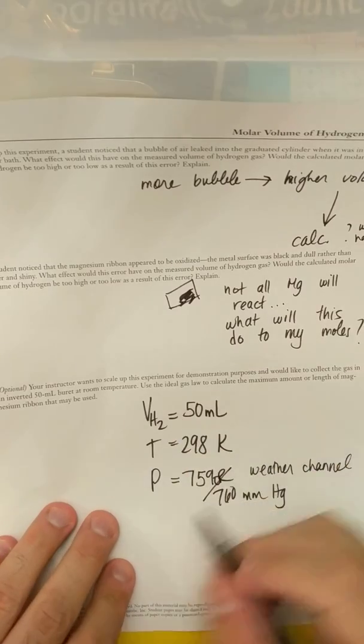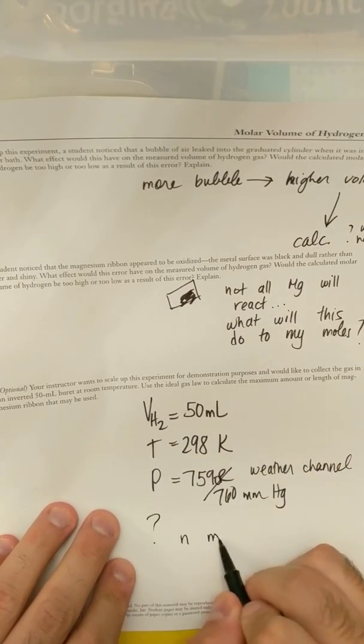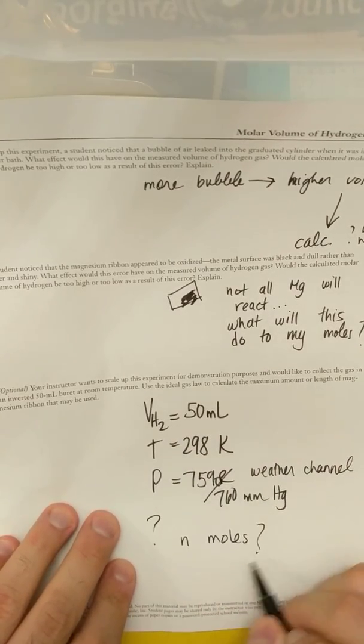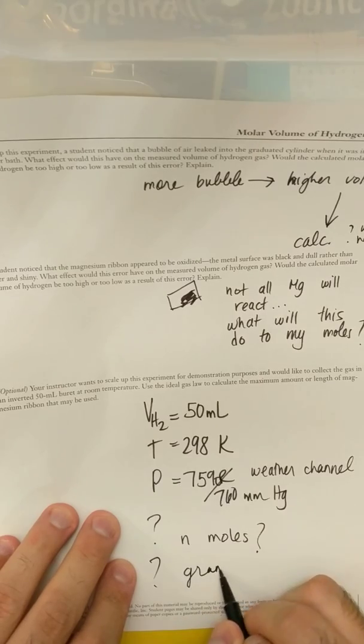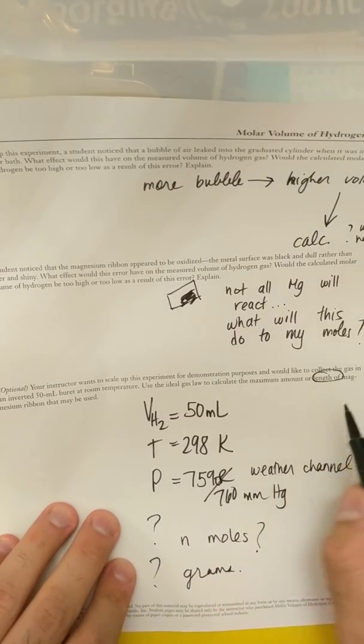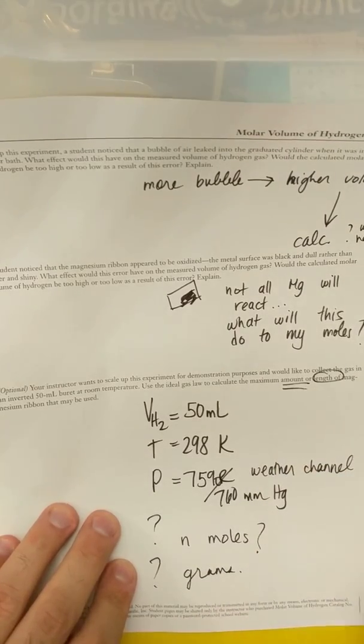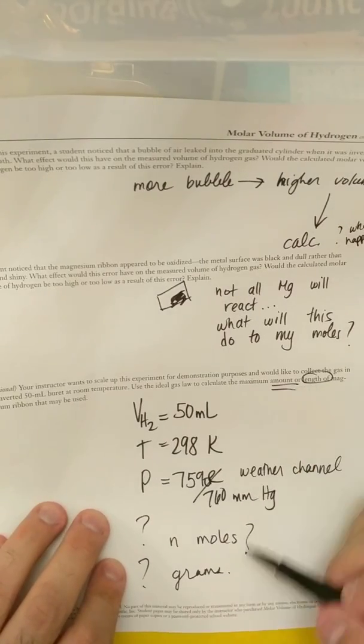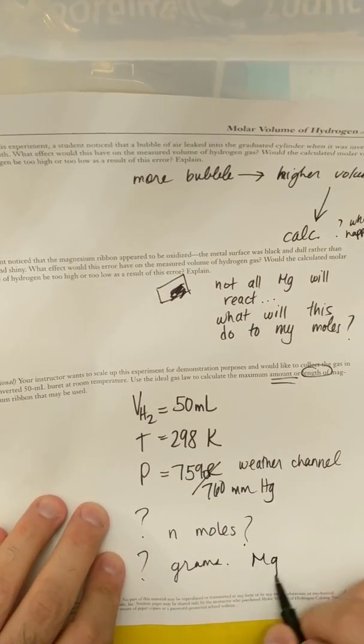So if I have P, T, and V, how can I solve for my moles? And then how many grams? It says length. You could just do amount. It says amount or length. Just do the amount. How many grams of magnesium could I use?